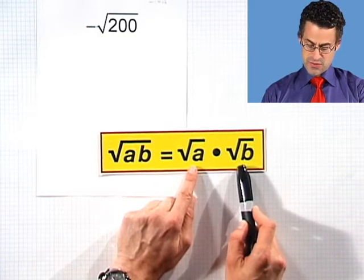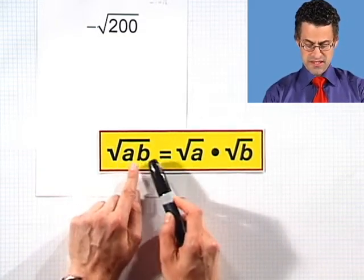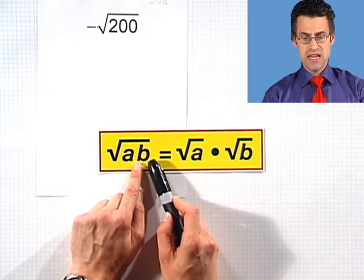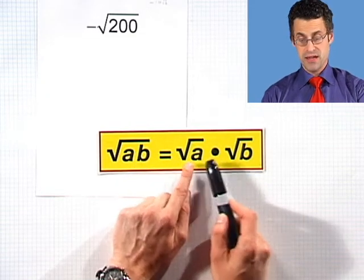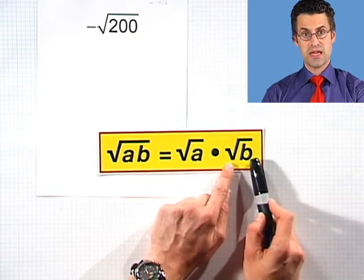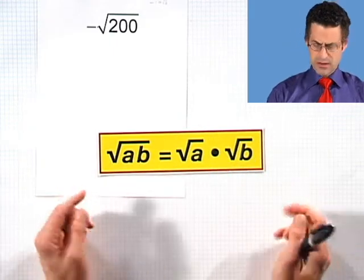And so in this case, what I see here is that if I have square root of something times something else, it actually equals the square root of the something times the square root of the something else. Why is that handy here?